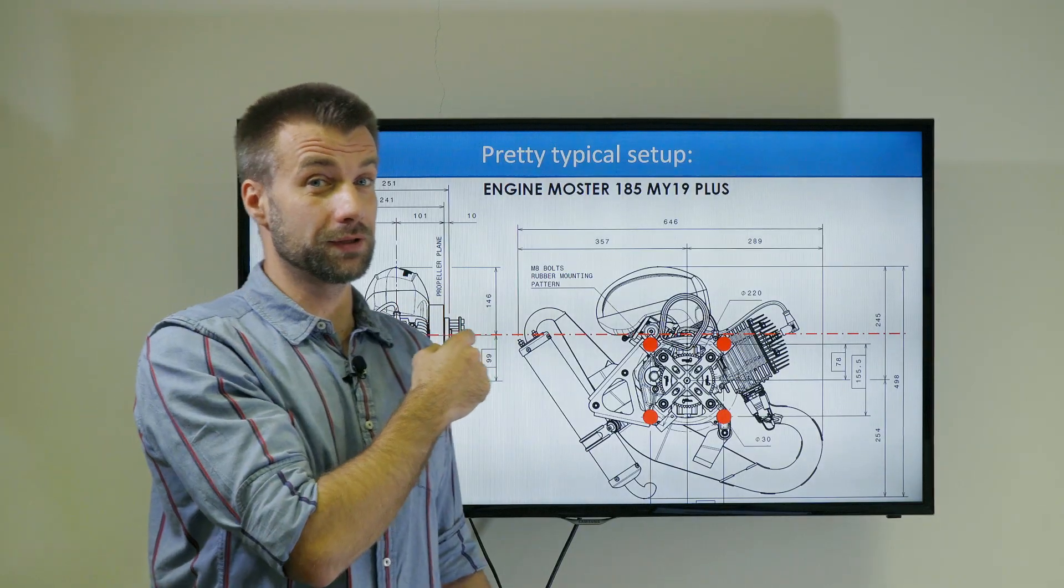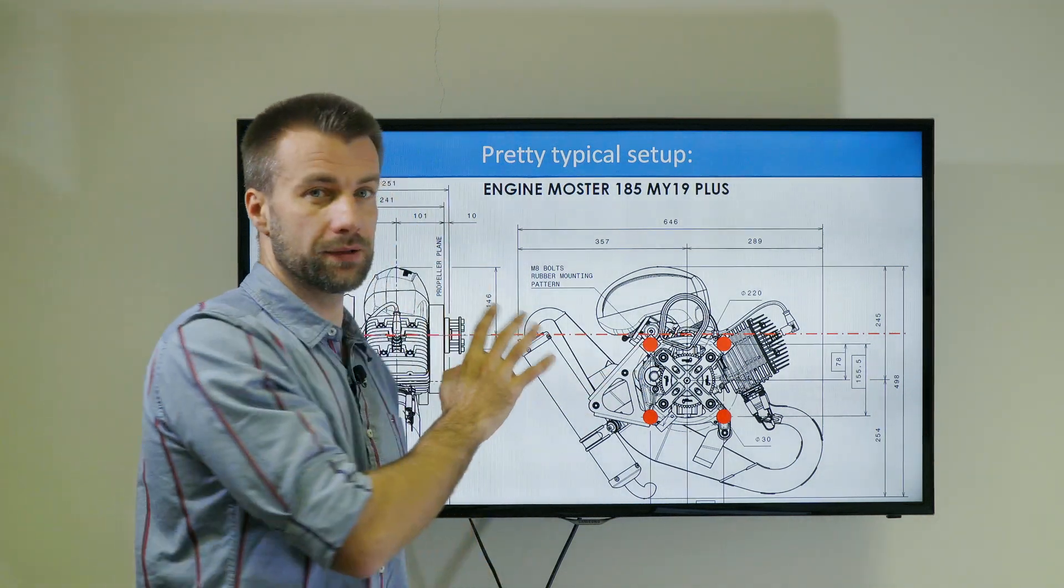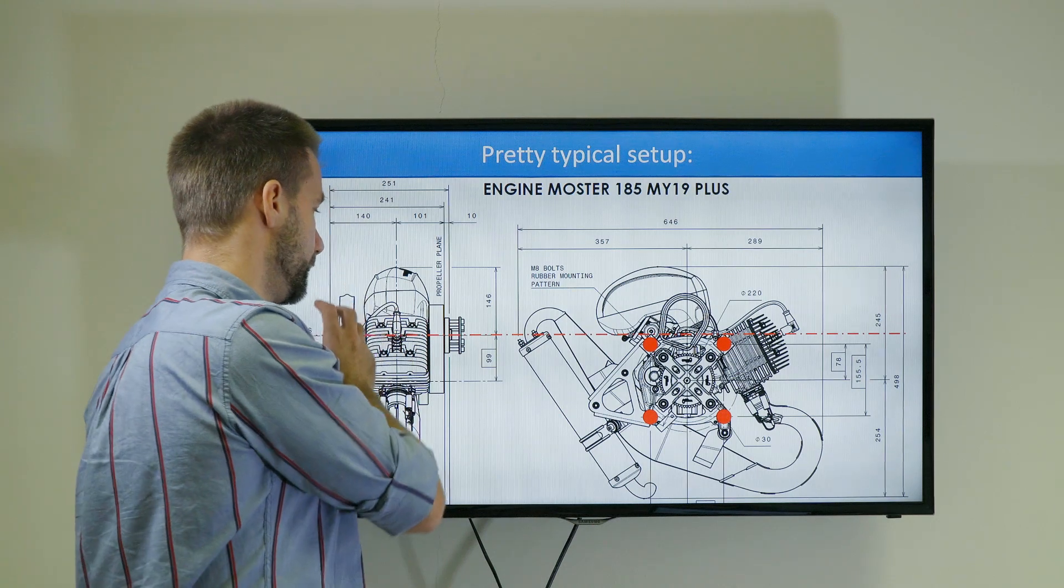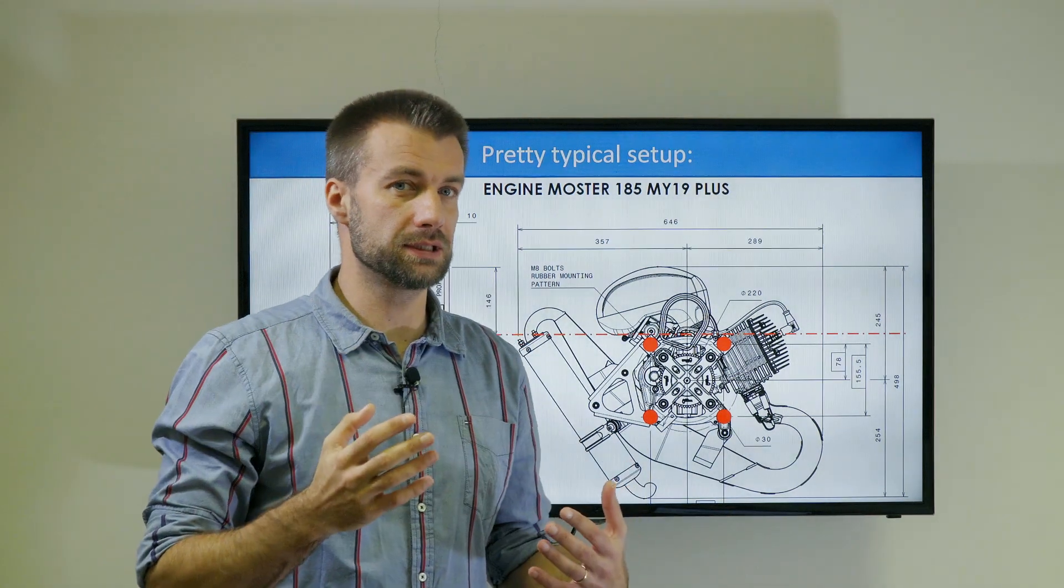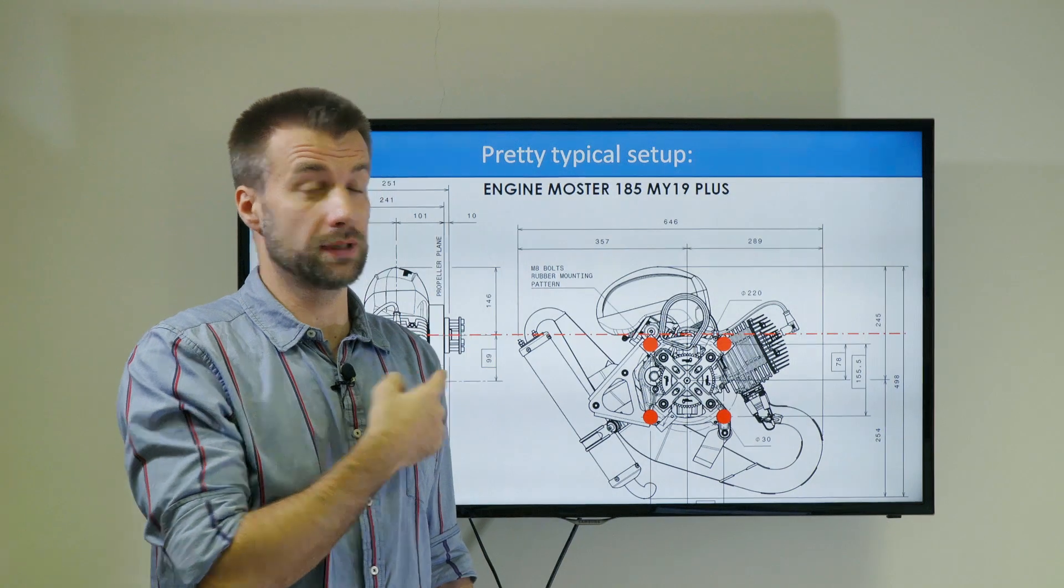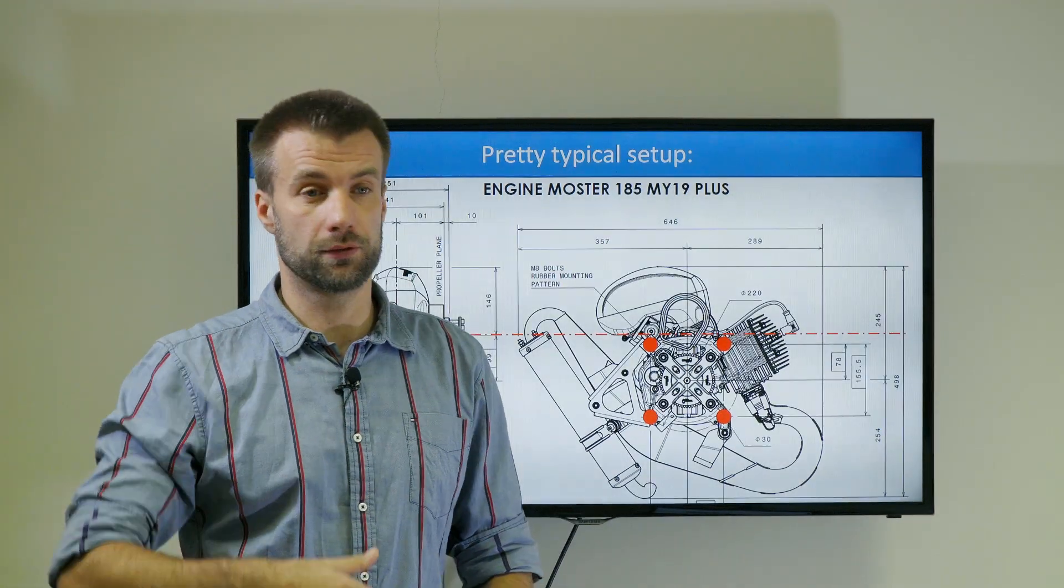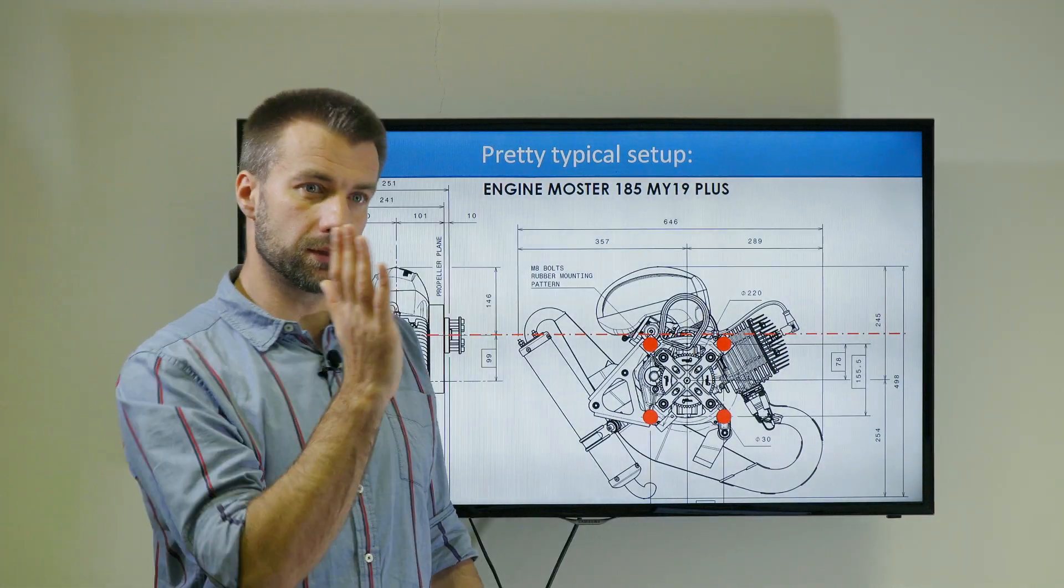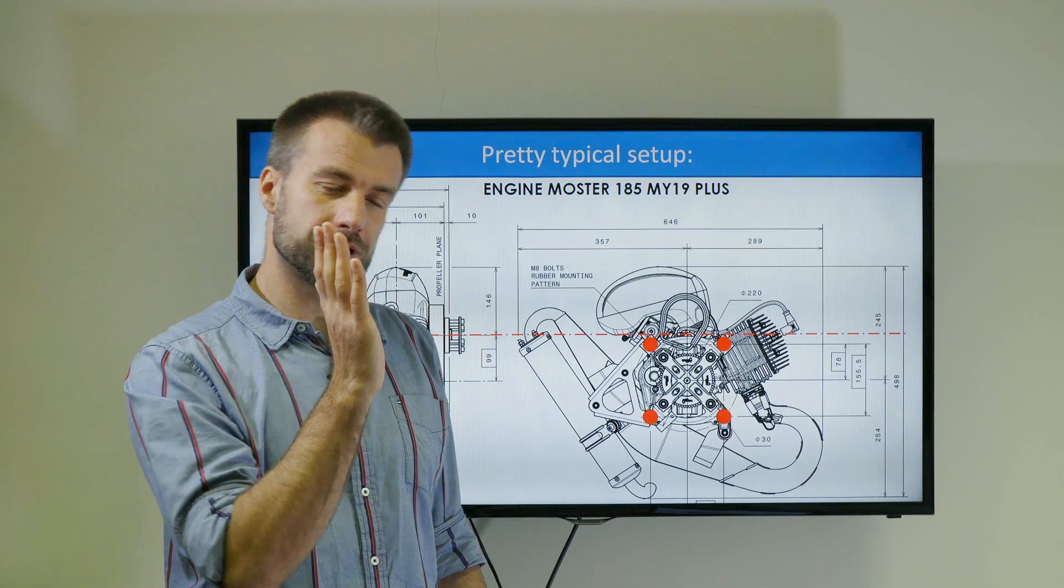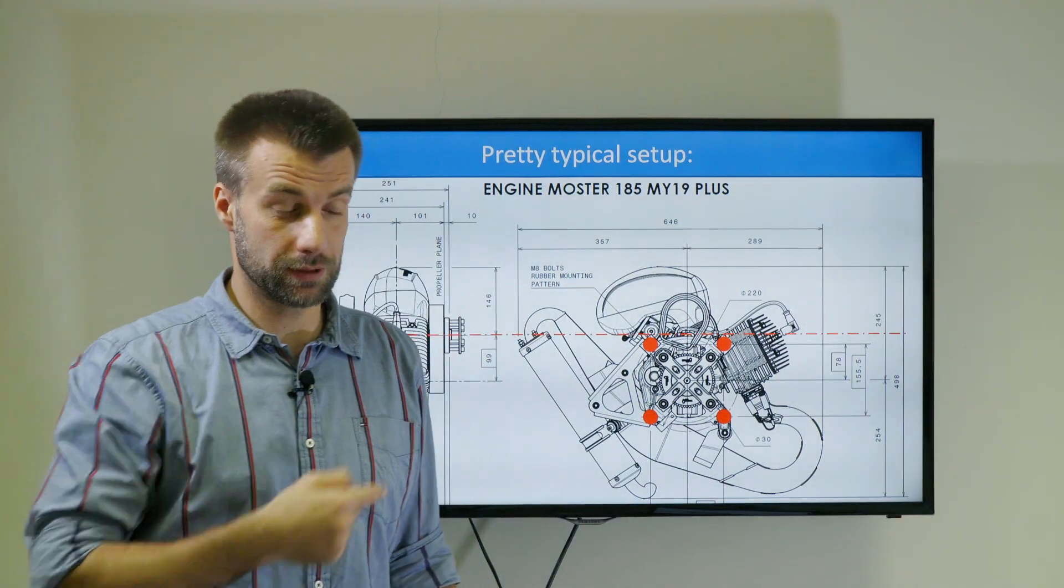But don't get me wrong, I'm not blaming the Vitorazzi. All engine manufacturers in this category, with this setup, with the belt reduction, and about the 180-200cc engine, they have the same system, they have the same setup. Whether it's Minari, Simonini, Corsair, or I don't know, whatever brand you take. It's not a big deal. We just install the engine a little bit, tilt it backwards. It just generates a lot of questions. So here's the answer.